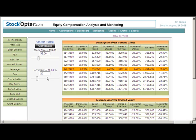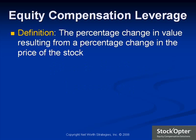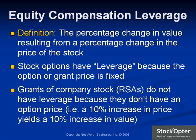Let's begin by reviewing the concept of leverage as it pertains to grants of company stock and options. Leverage is defined as the percentage change in value resulting from a percentage change in the price of the stock. Stock options have leverage because the option or grant price is fixed. Grants of company stock do not have leverage because they don't have a fixed option price, so a 10% increase in price yields a 10% increase in value.